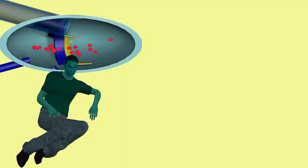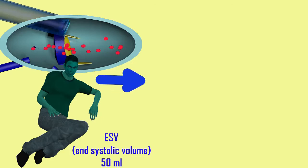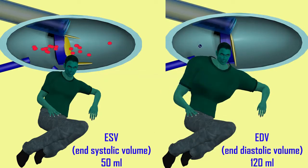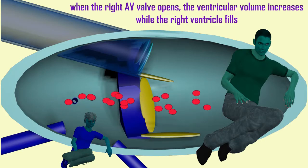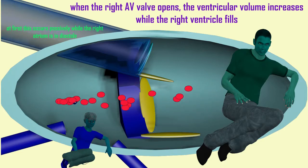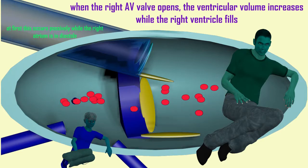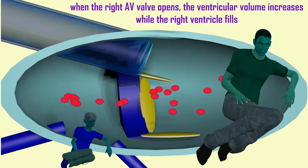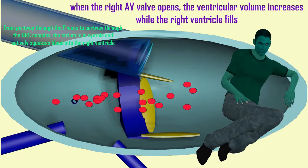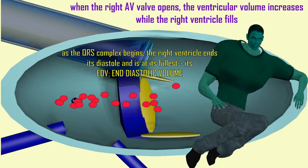Here you can see right ventricle man lounging about, clearly in diastole. After the systole of the previous cardiac cycle, the right ventricle is relatively empty, perhaps with only 50 milliliters of blood. Once the AV valve opens — the tricuspid — and blood enters the right ventricle, it becomes more full until it reaches its greatest volume, its end diastolic volume, with perhaps 120 milliliters of blood.